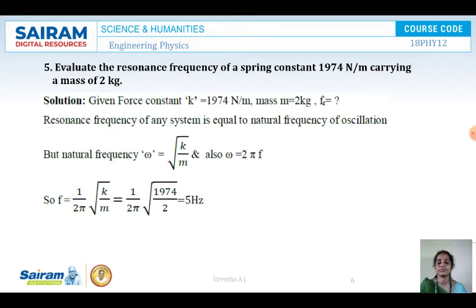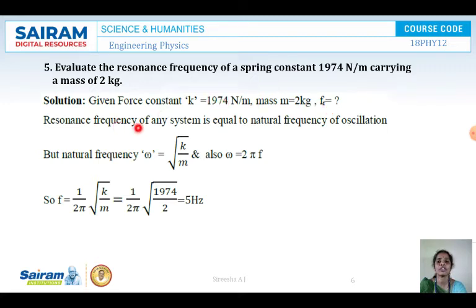Next problem: evaluate the resonant frequency of a spring with spring constant 1974 Newtons per meter carrying a mass of 2 kg. K equals 1974 and mass is 2 kg. We have to calculate the resonant frequency. We know that resonant frequency equals the natural frequency of oscillation. When the applied frequency becomes equal to the natural frequency, resonance happens.